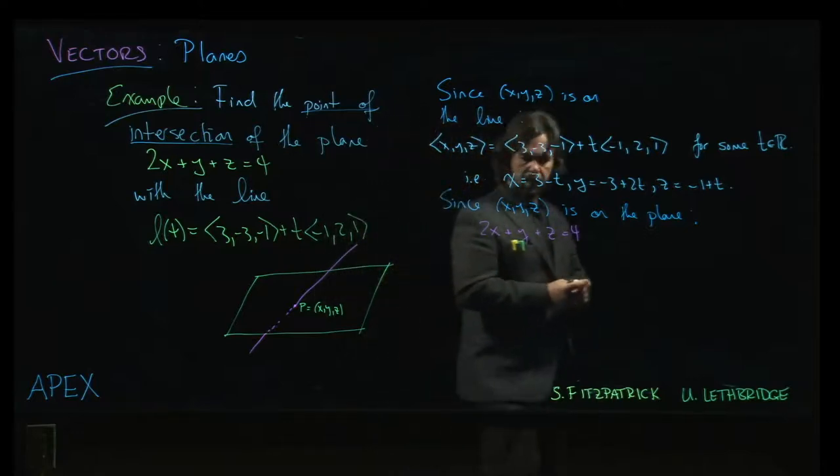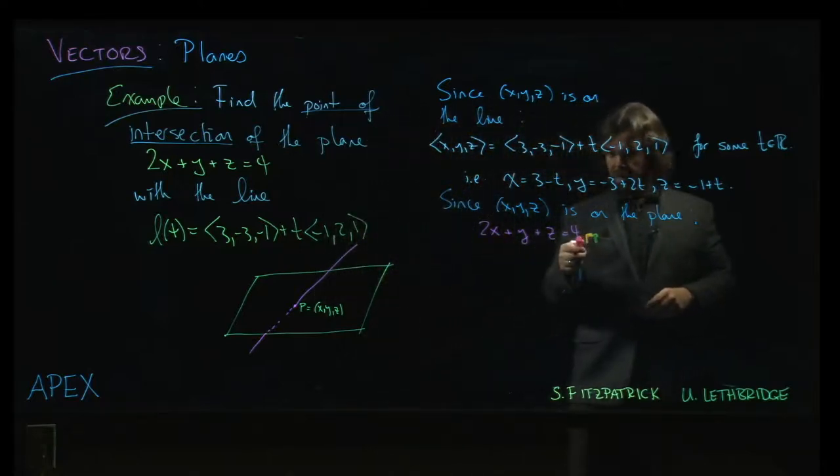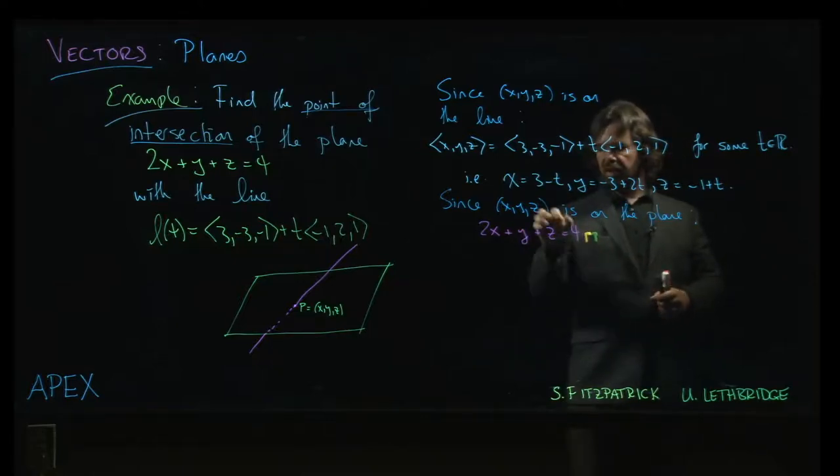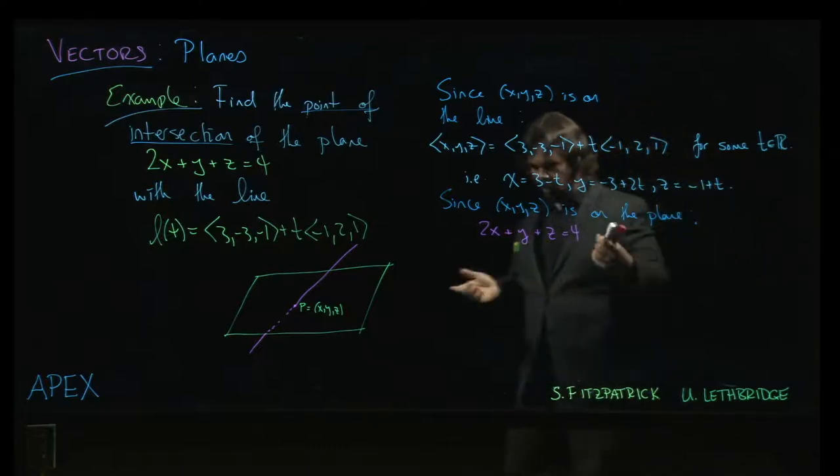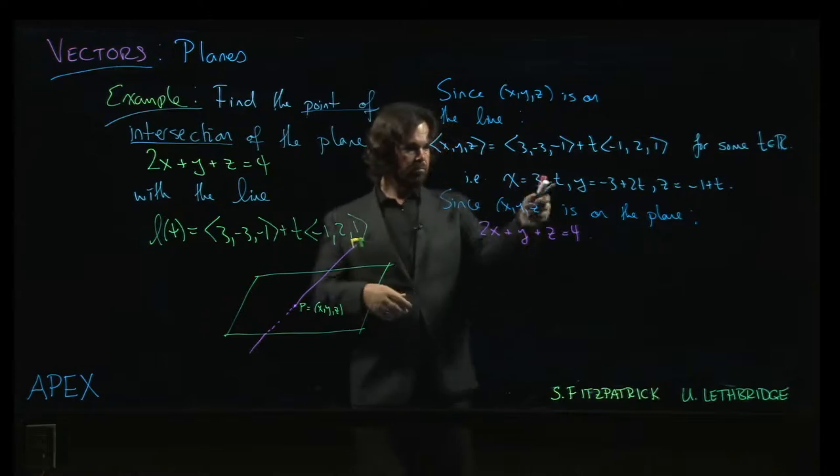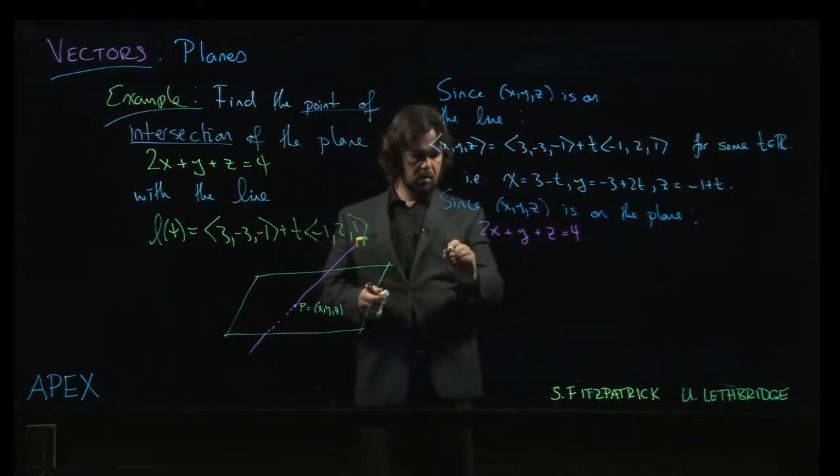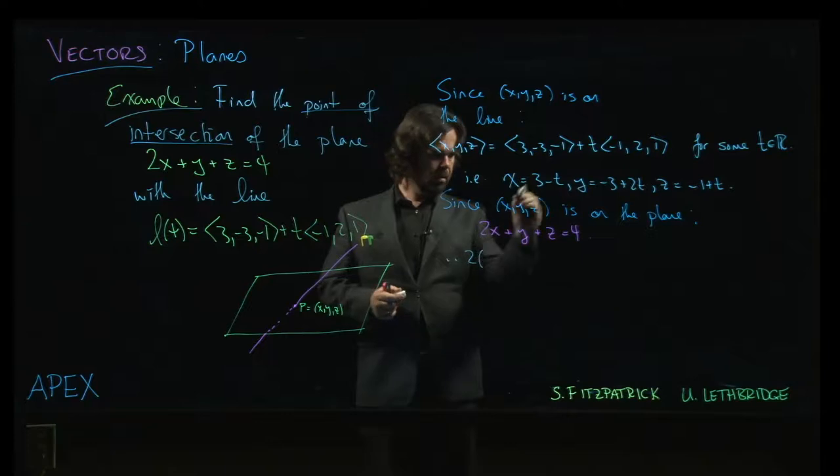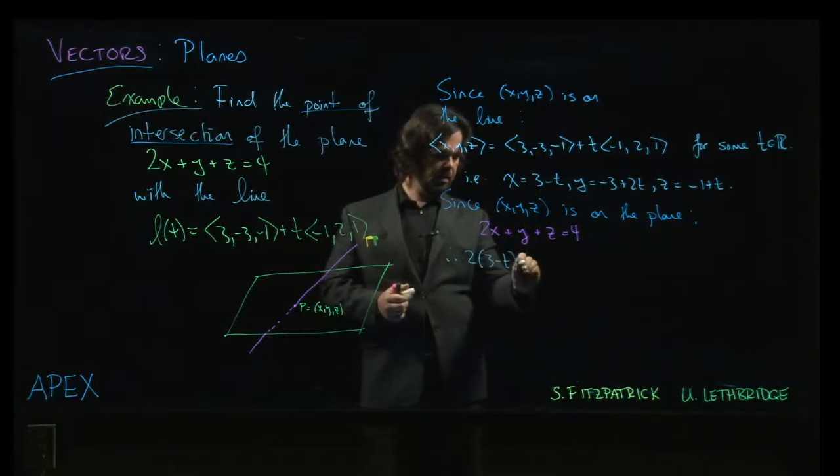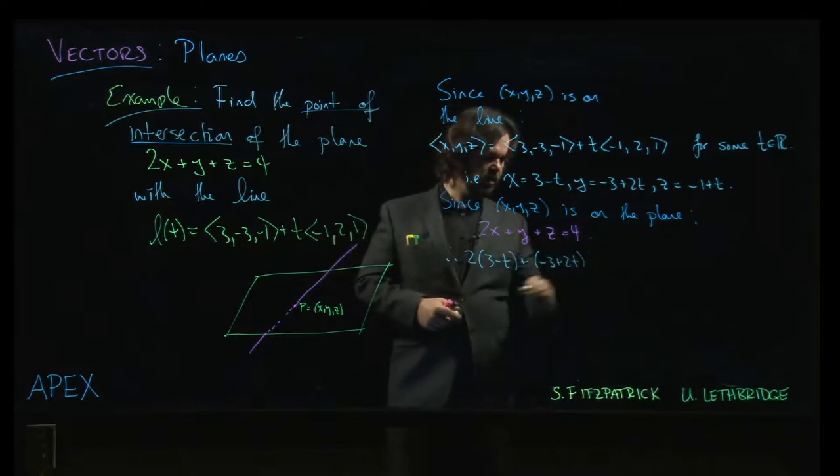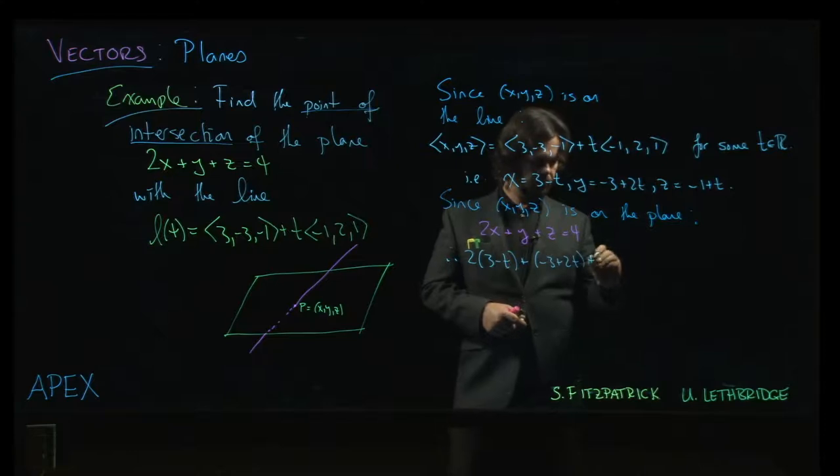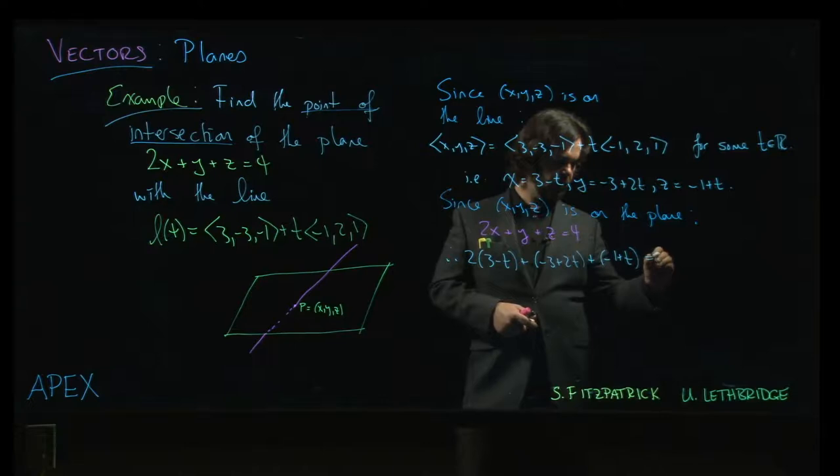So, two things have to happen at the same time. One, this equation needs to be satisfied, so 2x plus y plus z has to equal 4. But, at the same time, x, y, and z have to be given by these parametric equations for some value of t. What do we do? Substitute. So, 2 times (3 minus t) plus (-3 plus 2t) for y, plus (-1 plus t). Plug that in for z. That has to equal 4.